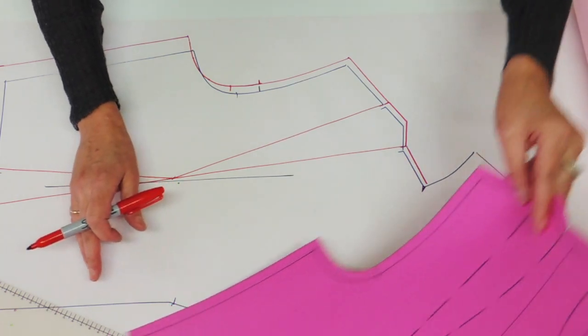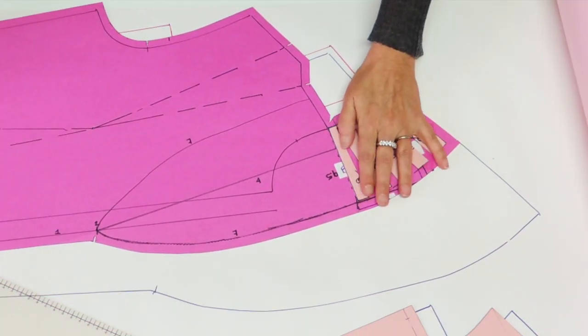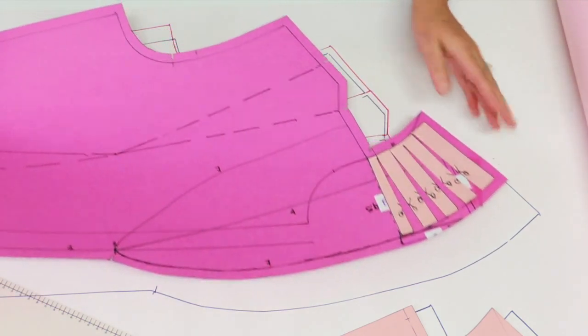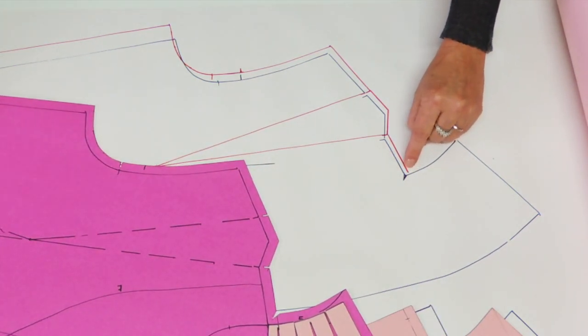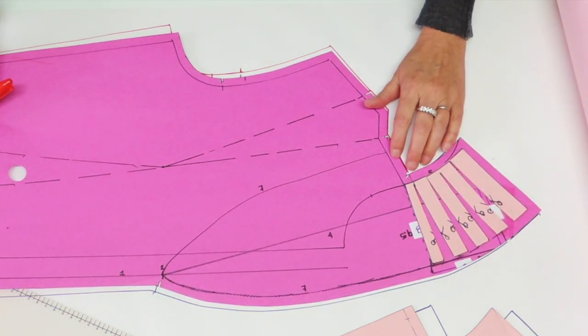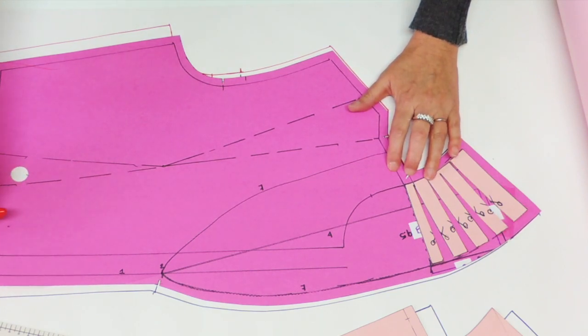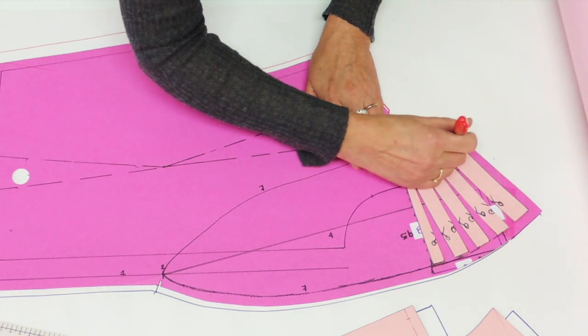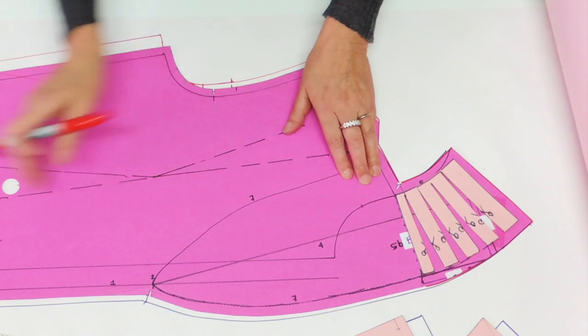Now here's the tricky area for the shawl collar. This part here belongs to the back so it does need a separate grading. And what you're going to do, from the new point, the new neck and shoulder point, you're going to replace your bodice right on, keeping your center front parallel. And from that new point, you're going to trace the back part of the collar. So just trace this part of your collar.